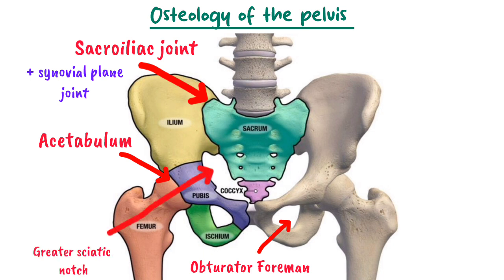The fourth landmark is the greater sciatic notch, which allows the sciatic nerve to pass from the pelvic cavity to the posterior thigh. The piriformis muscle also passes through this notch. The fifth landmark is the pelvic inlet and the pelvic outlet. The pelvic inlet is the upper border of the pelvis where structures of the digestive, urogenital, vascular, and nervous systems pass between the abdominal and pelvic cavity. It is formed by the sacrum, the arcuate line, and the pubic symphysis. The pelvic outlet is the lower boundary marked by the pubic symphysis, the ischial tuberosity, the coccyx, and the ischiopubic ramus, forming the passage between the perineum and the pelvic cavity.